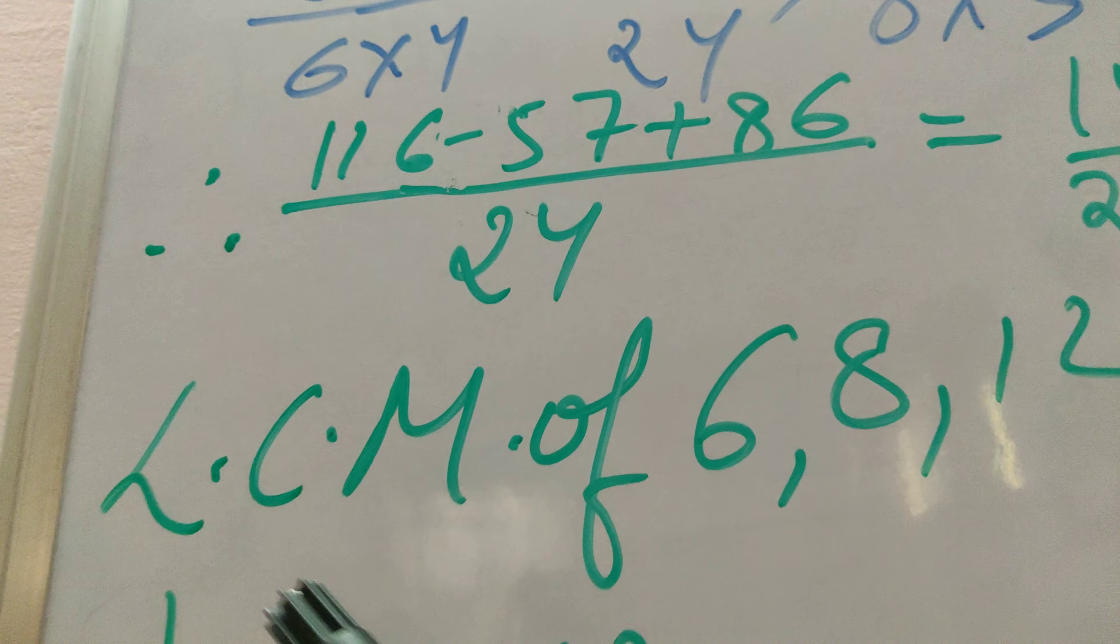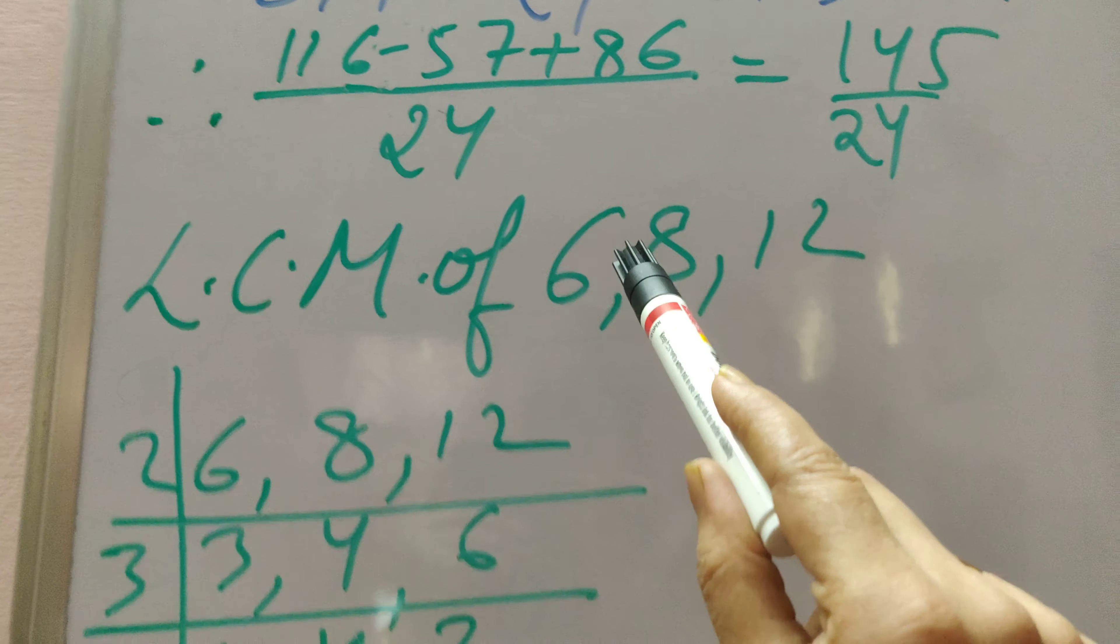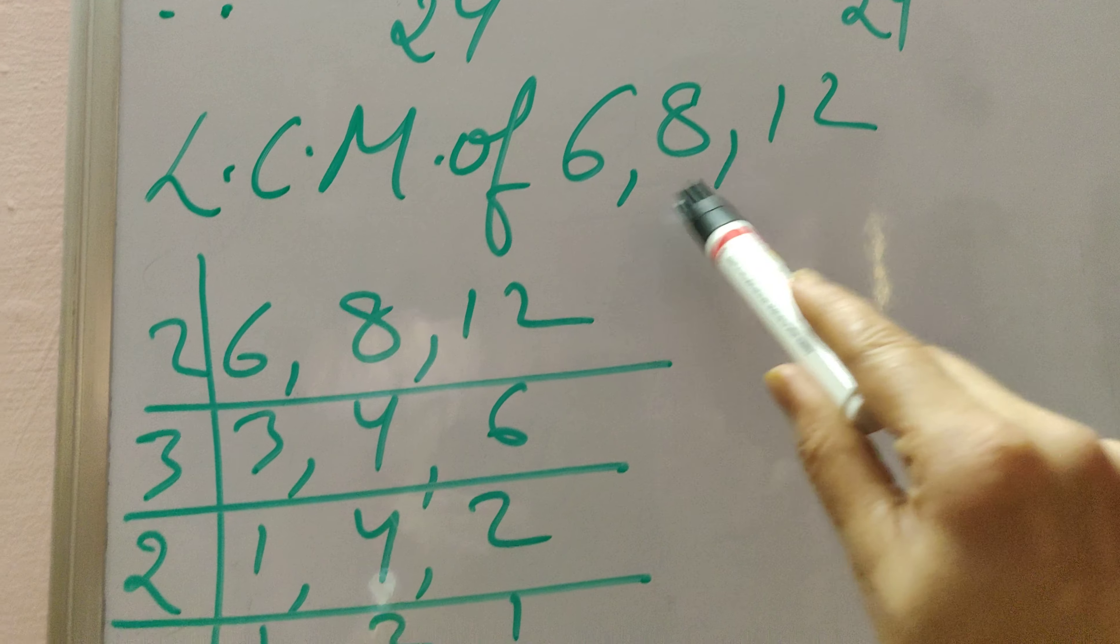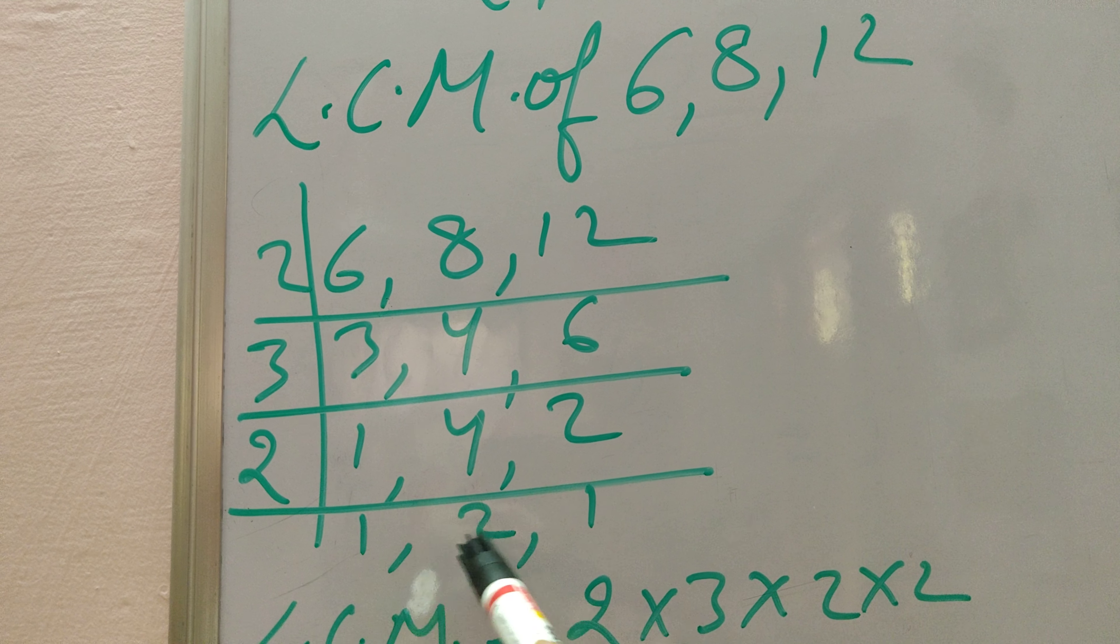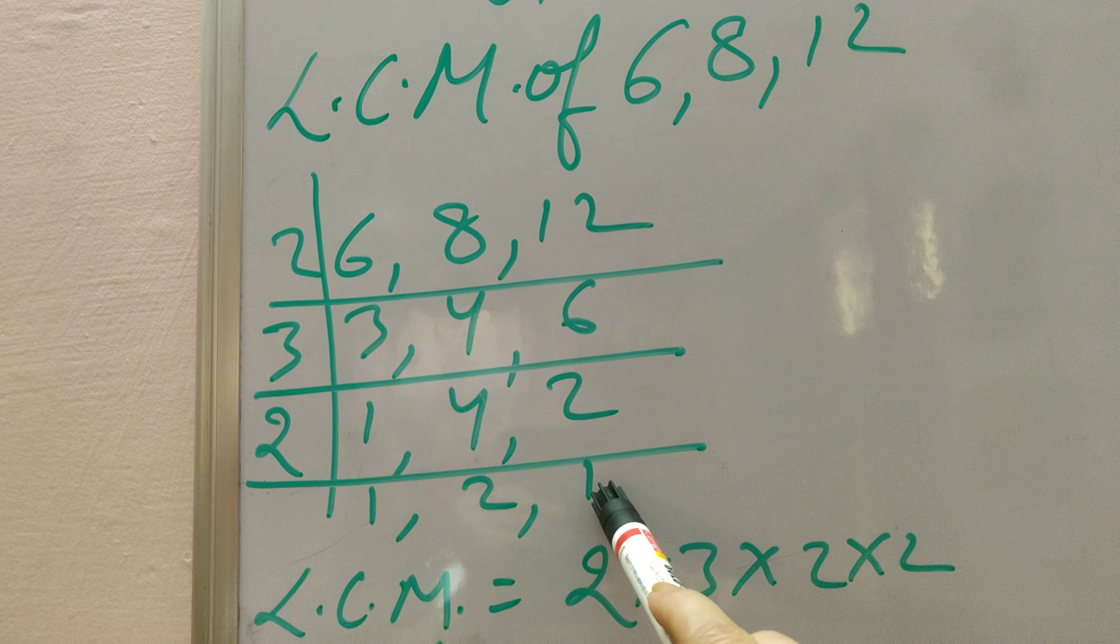I have taken here LCM, you can see, LCM of 6, 8, and 12. So I think you know how to take the LCM. So LCM of 6, 8, and 12 comes at 2 times 3 times 2 times 2, that is 24.